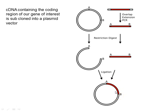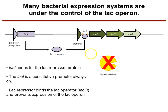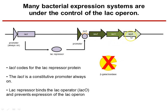Once the gene is in, we need to get it expressed. To do that, we're going to use a version of the LAC operator. The LAC operator is one of the first gene systems that was fully characterised. We have the LAC inhibitor that creates the LAC repressor protein. This repressor protein binds to the operator and prevents the promoter from transcribing the genes downstream — in this case, LacZ, LacY, and LacA.